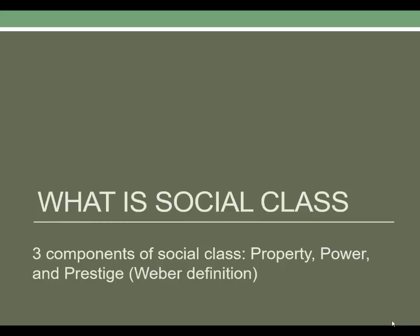When we speak of social class, there are several sociological definitions. Your textbook prioritizes the Weber definition, which is based on three components: property, power, and prestige — the three Ps. We'll talk about all three separately, and then discuss an alternative definition as offered by conflict theorists, particularly Karl Marx.